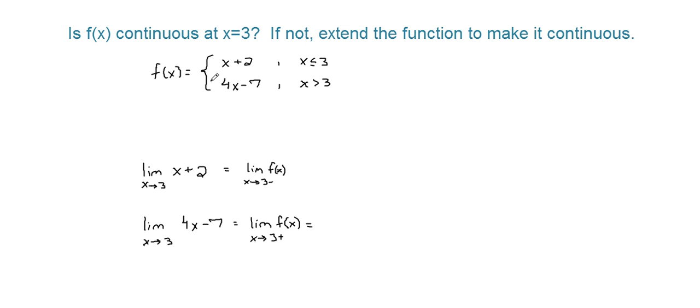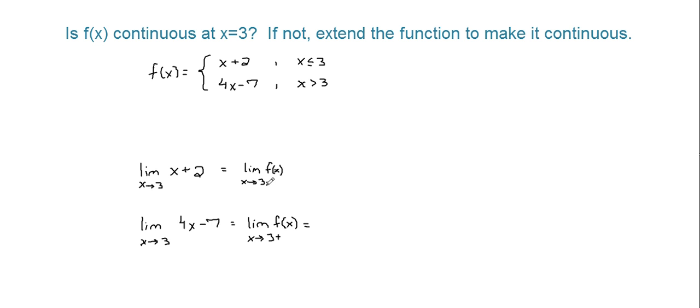Okay, our last example here, piecewise function: is f(x) continuous at x equals 3? If not, extend the function to make it continuous. Well, our two pieces of this function are x plus 2 and 4x minus 7. It behaves like x plus 2 when x is less than or equal to 3, and 4x minus 7 when x is greater than 3. It comes down to just taking the limit.